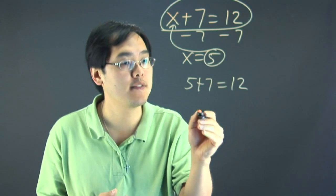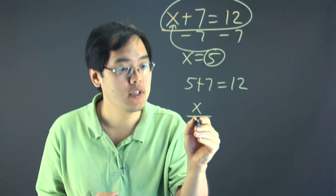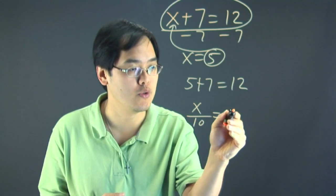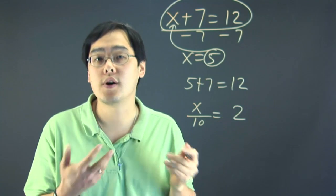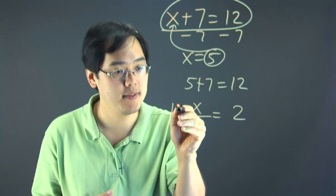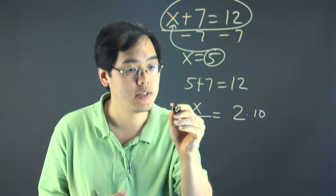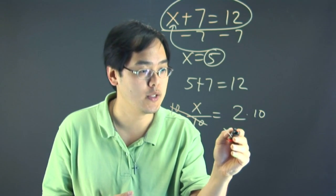Now, another example, let's just say if you have x over 10 is equal to 2, you can solve for x by multiplying both sides by 10. The 10s cancel, you have x is equal to 20.